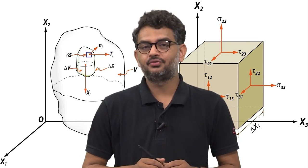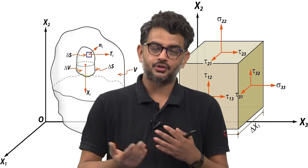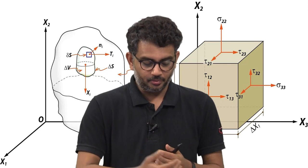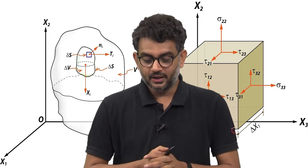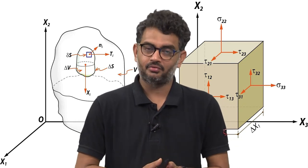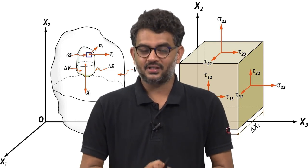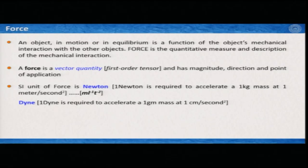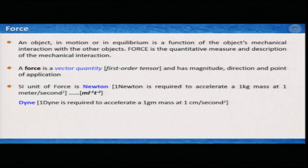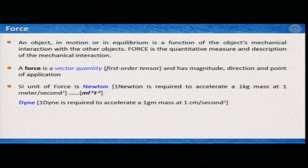If I ask you what is force, the common answer is that force is a pull or push that you apply to a body. This is true but not absolutely complete. For example, I am standing here — apparently no one is pulling or pushing me, but there is at least one force acting on me: the gravitational force going down, and then an equal and opposite force acting from the ground to me, which is why I am balanced. Force is the interaction of a material with some quantities. An object in motion or in equilibrium is a function of the object's mechanical interaction with other objects, and force is the quantitative measure and description of this mechanical interaction.